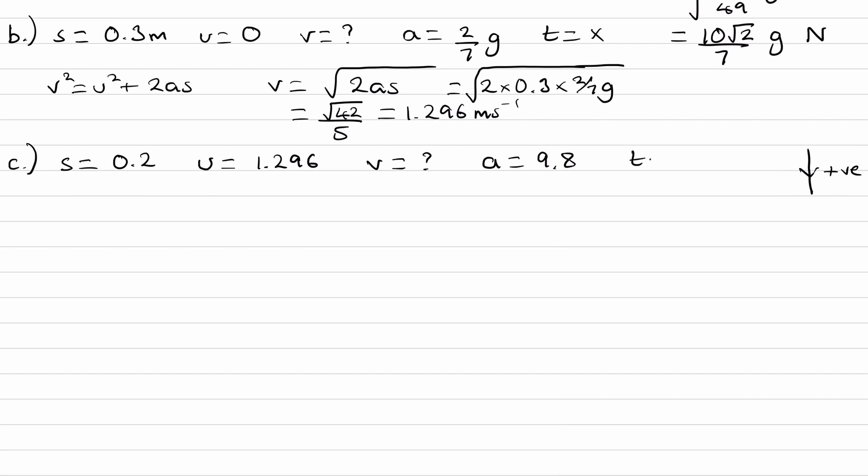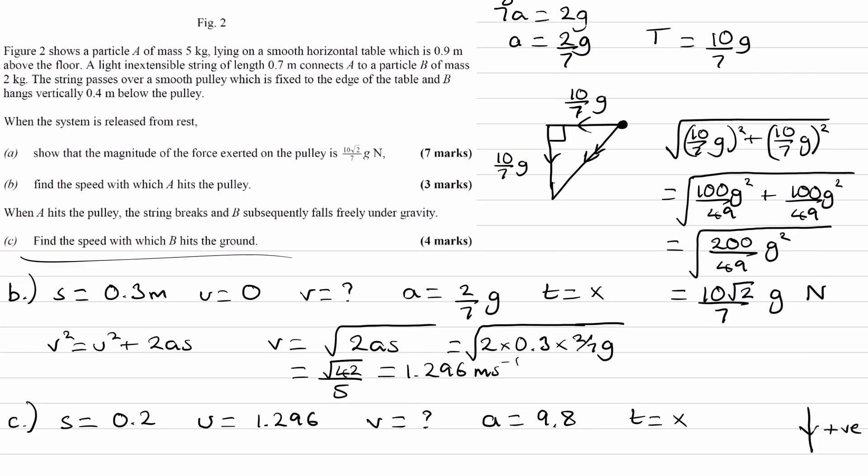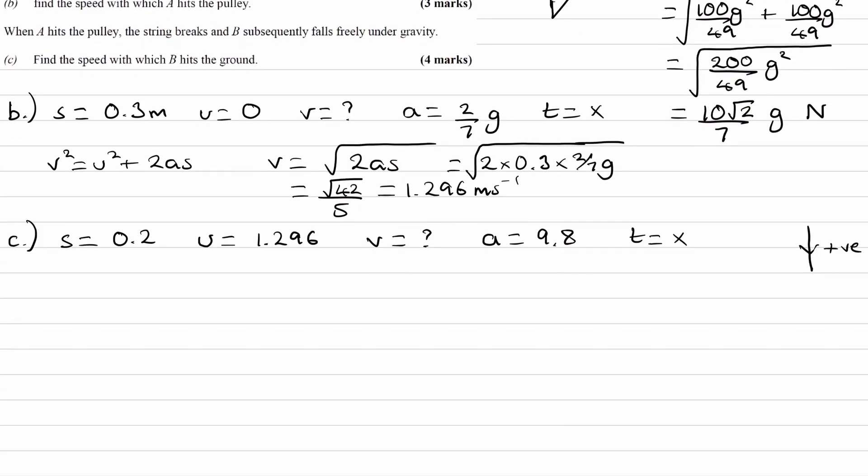Time is not needed. We're working out the speed with which B hits the ground. We can use the SUVAT equation v² = u² + 2as. So v = √(u² + 2as) = √(1.296² + 2 × 9.8 × 0.2). Using the exact value from the calculator, this gives 2√35/5 = 2.37 meters per second.